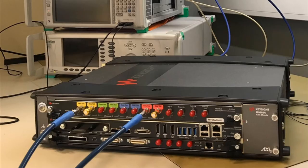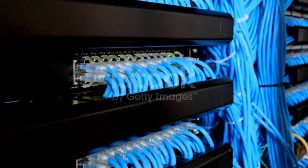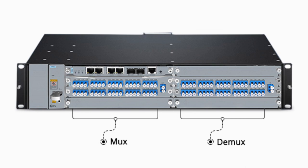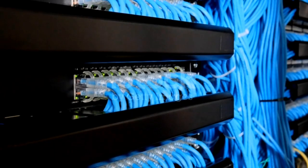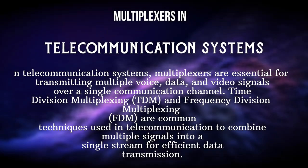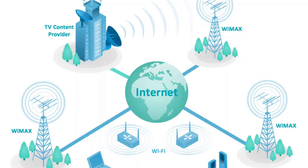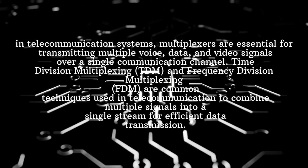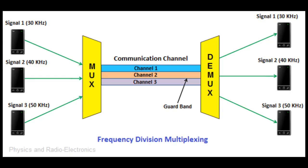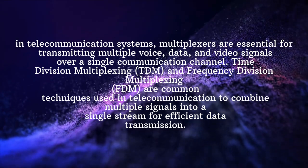Multiplexers and demultiplexers are widely used in various real-life applications for combining and transmitting multiple signals into a single line. In telecommunication systems, multiplexers are essentially used for transmitting multiple voice, data, and video signals over a single communication channel. Time Division Multiplexing is a commonly used technique in telecommunications to combine multiple signals into a single stream for efficient data transmission.